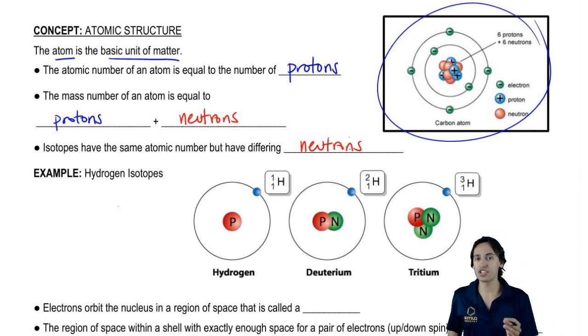And what that means is that essentially when you have an isotope, that is the same atom in terms of it's going to react very similarly to another atom of similar protons. The only difference is that it's going to be either a little heavier or a little lighter depending on whether it has a few more neutrons or a few less neutrons.